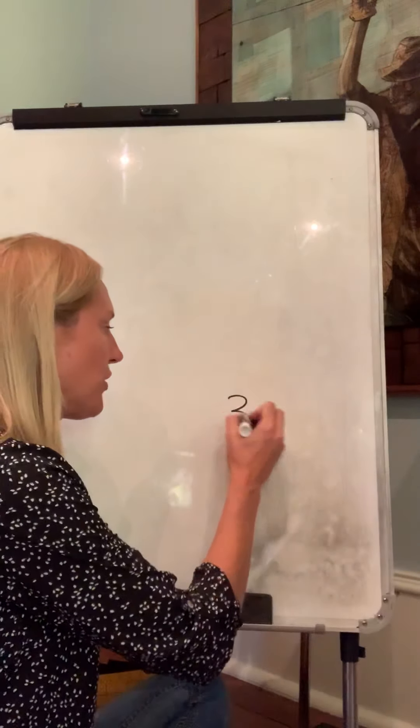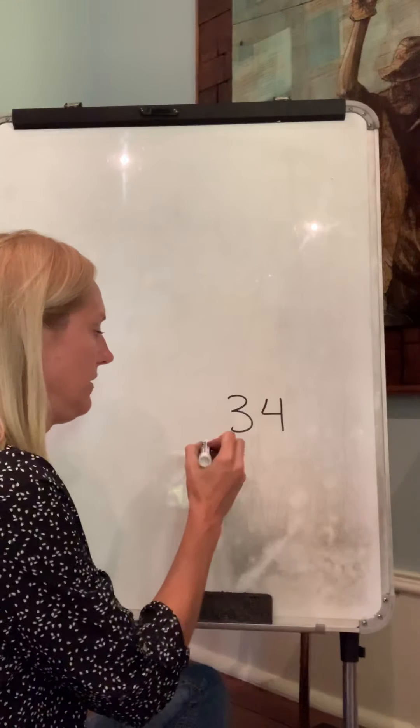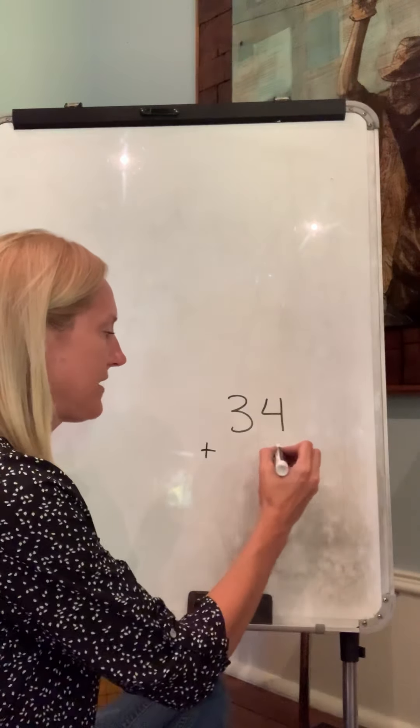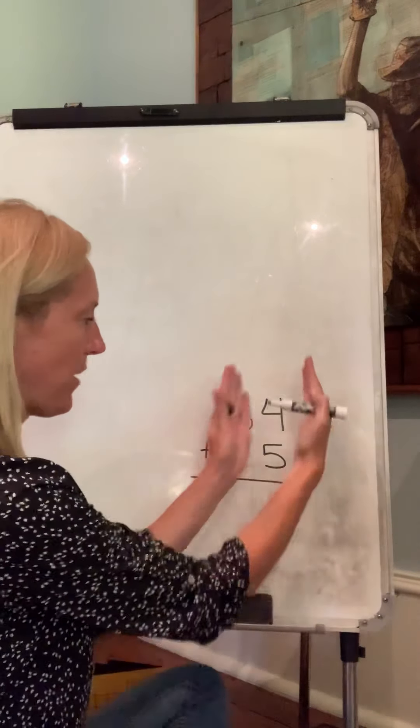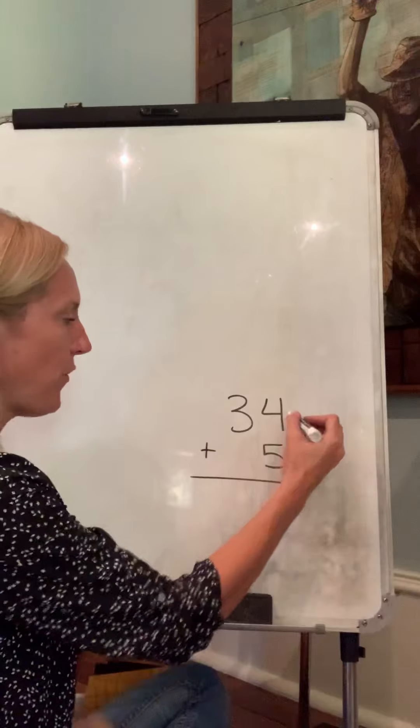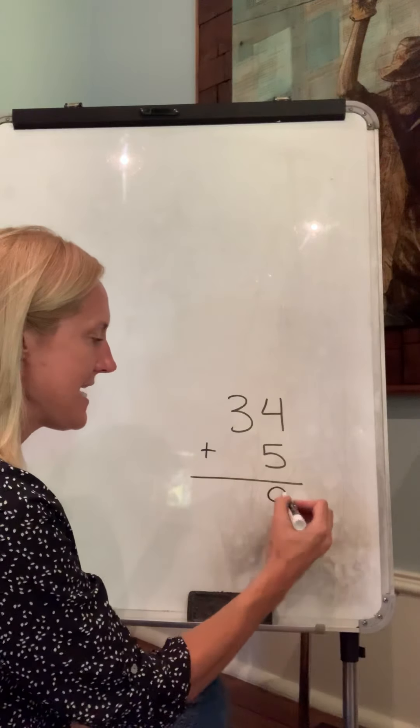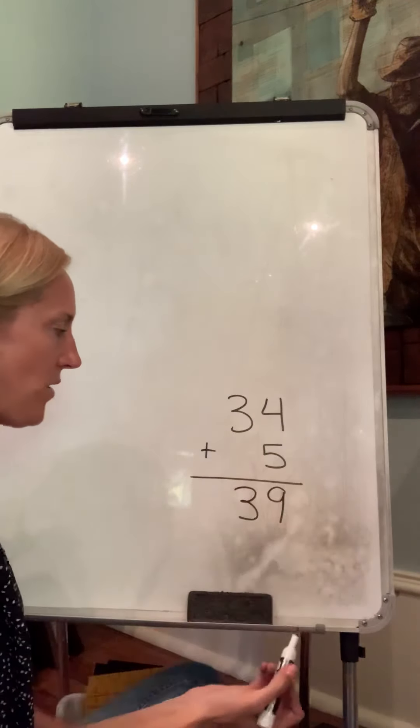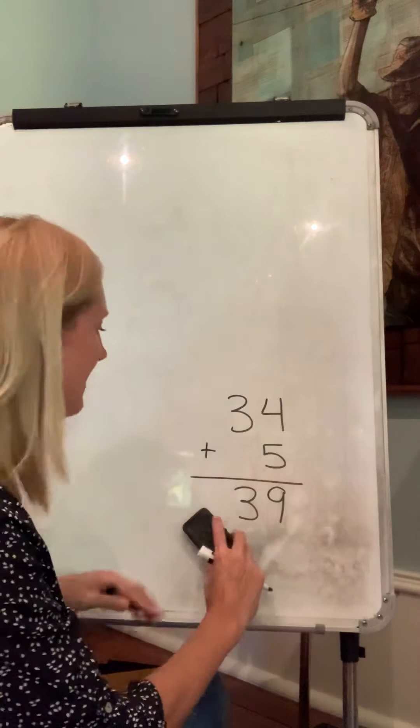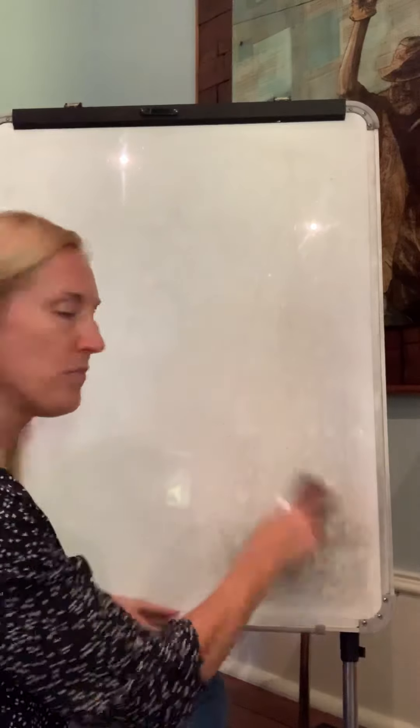With addition, we might have thirty-four plus a number, like thirty-four plus five. We've got our ones together, our tens together. Four plus five is nine, three plus zero is three. So we've learned we can work with bigger numbers.